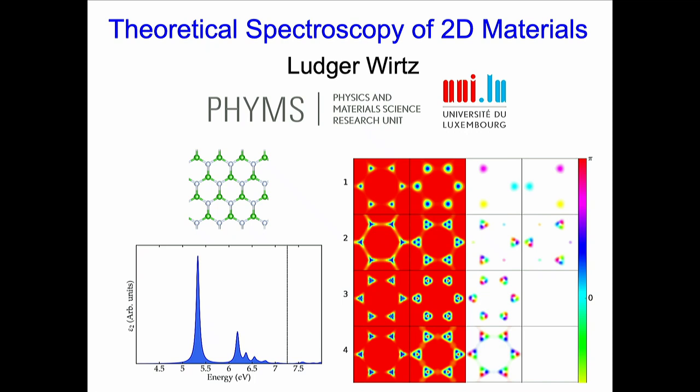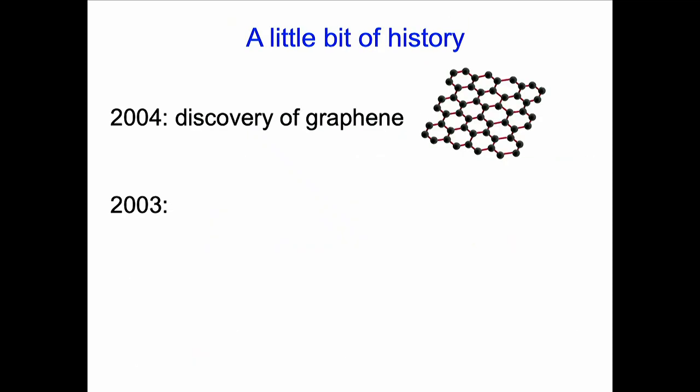I slightly changed the title, which was 'Excitons in Low Dimension'. I generalized it a little bit to theoretical spectroscopy, which of course involves excitons, and I mostly talk about two-dimensional materials.